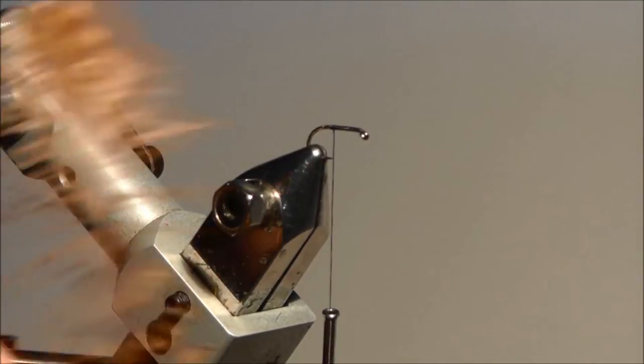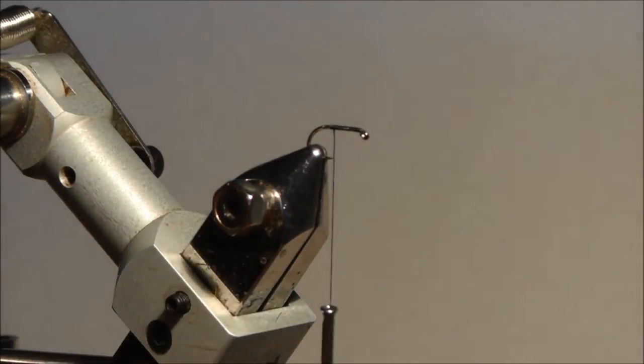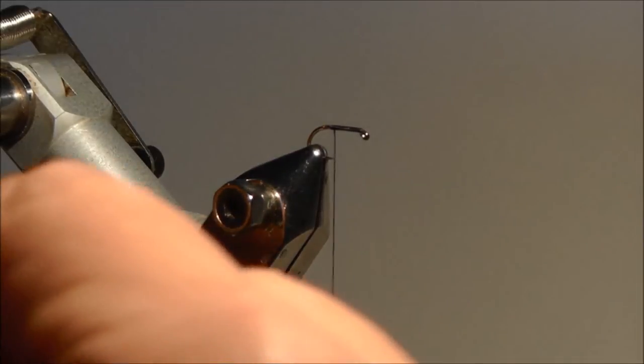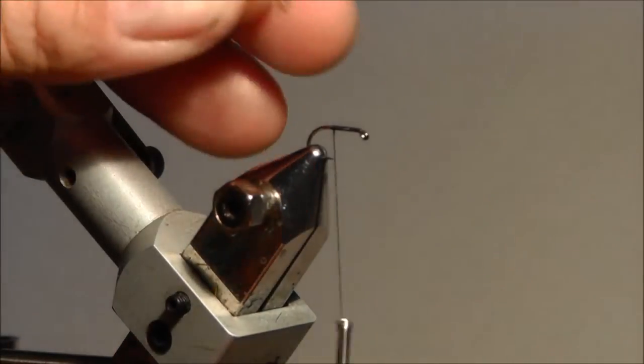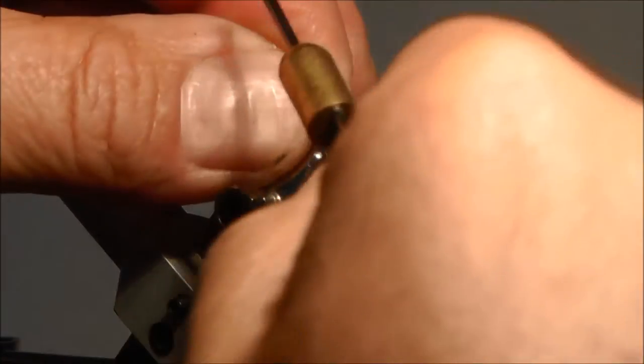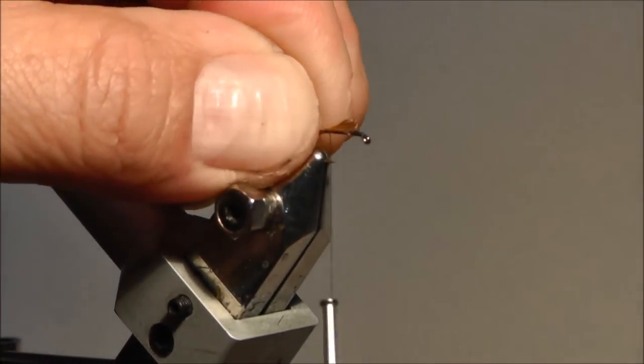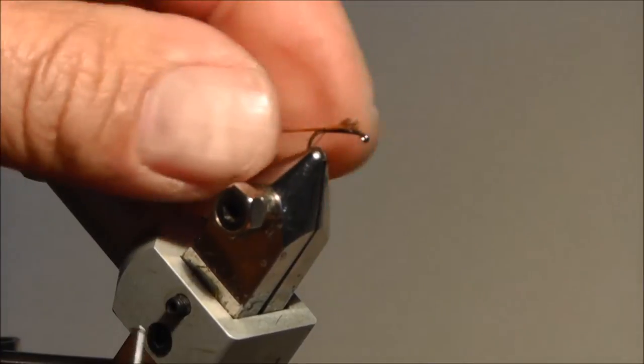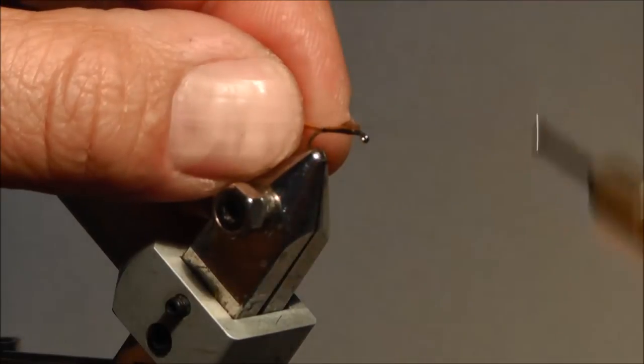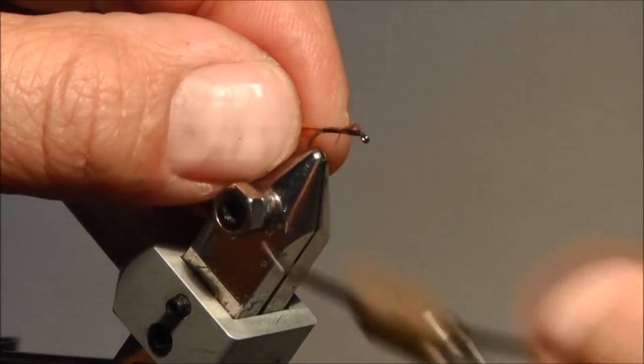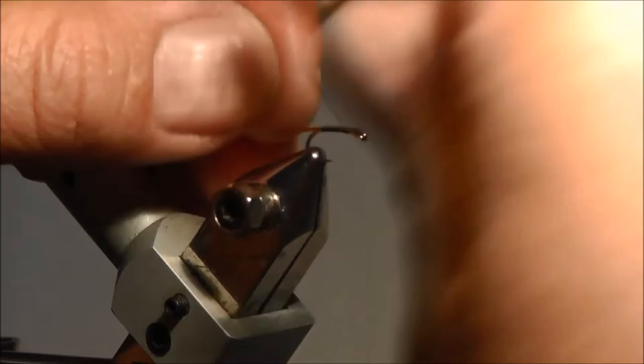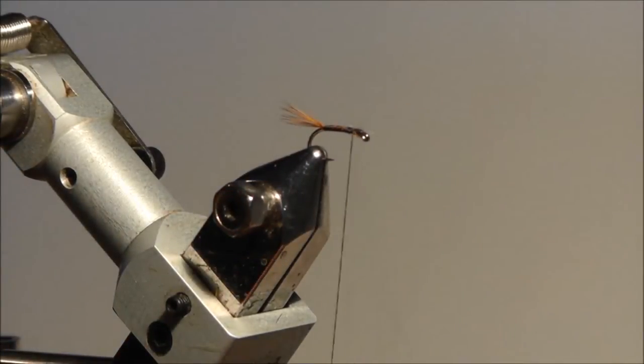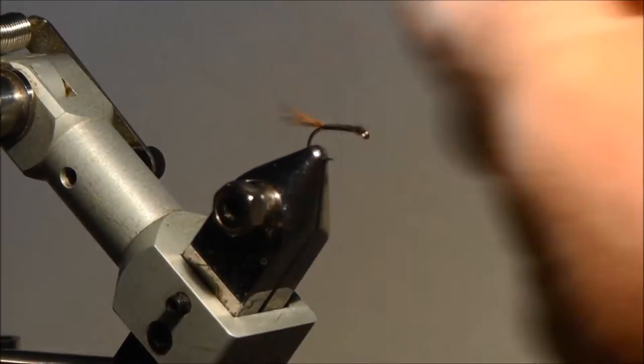Okay, we make a tail out of a few barbs of a Chinese hen hackle. Okay, like so. And we bring the thread all the way back up to the hook eye. Come forward, backwards.